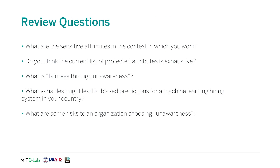Here are some review questions about this material. What are the sensitive attributes in the context in which you work? Do you think that the current list of protected attributes is exhaustive? What is fairness to unawareness? What variables might lead to biased predictions for a machine learning hiring system in your country? What are some risks to an organization choosing unawareness?